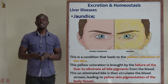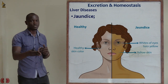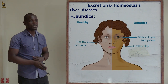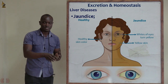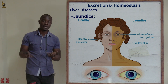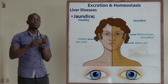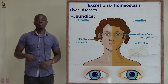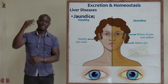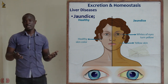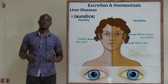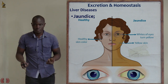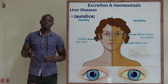Since excess bile remains in the blood, the skin pigmentation changes color from the normal color — whether for Africans, Americans, or Europeans — to a yellow color. Bile circulates freely around the body, causing the skin to assume this yellow color.